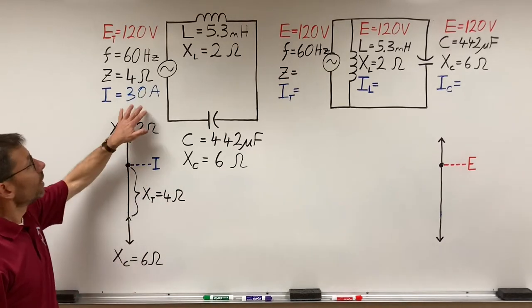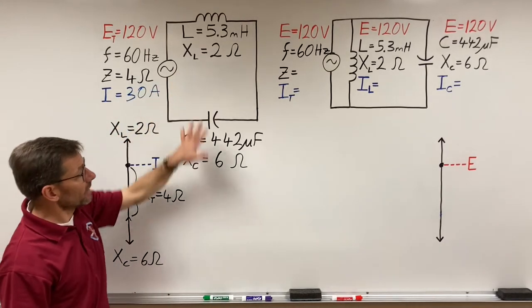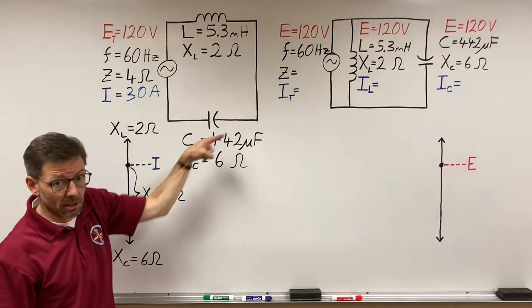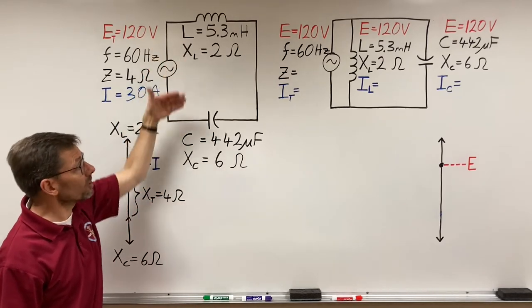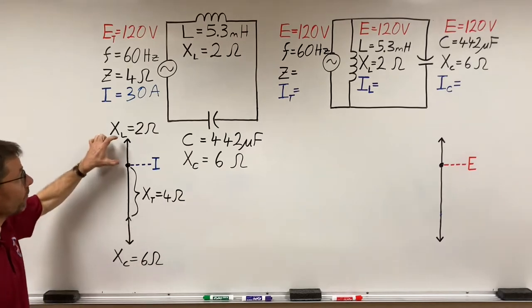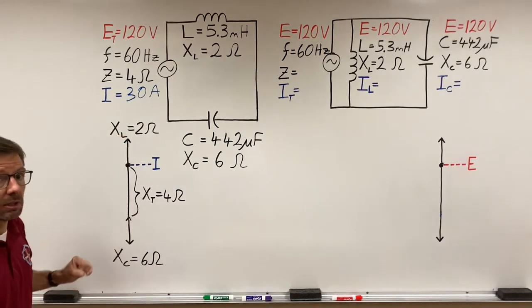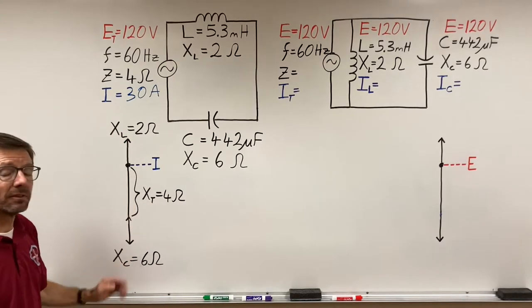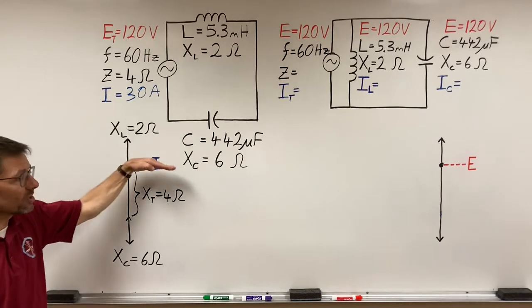Volt divided by ohms give me amps. 30 amps. Now, you could take that 30 amps and put it here and here. Series circuit, same current. Figure out your voltage drops and your power values, and those vectors would be proportional. Again, just reactive components. No resistive values.